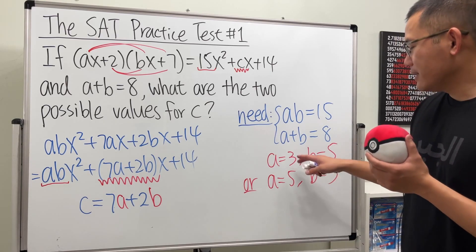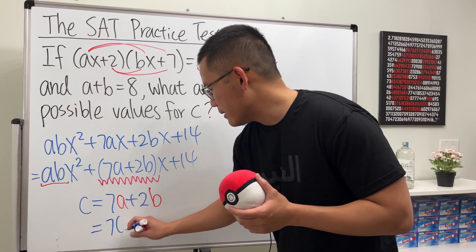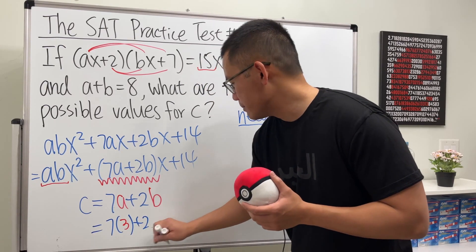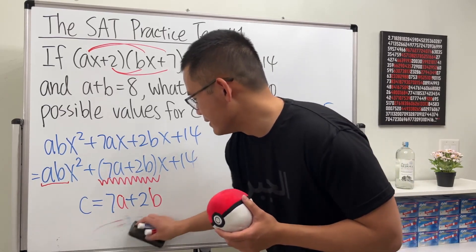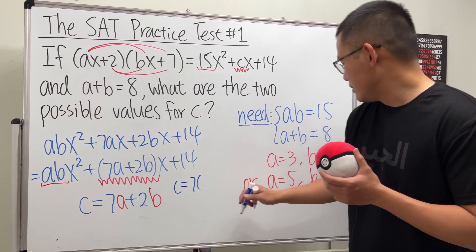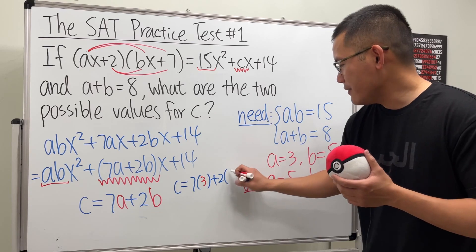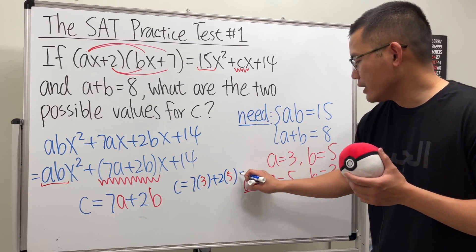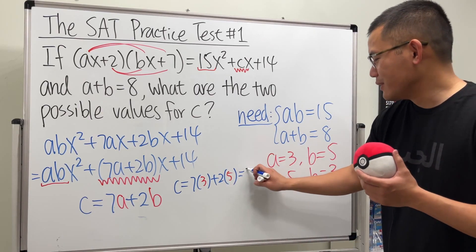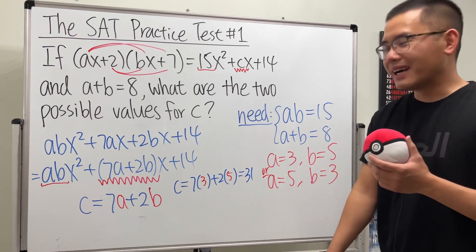So first, we can see that we get 7 times 3 and then plus 2 times b. So c is equal to 7 times a, which is 3, and then plus 2 times 5. And together here, we see that that's 21 plus 10, which is 31. And let me put down the work. So that's the first possible answer.